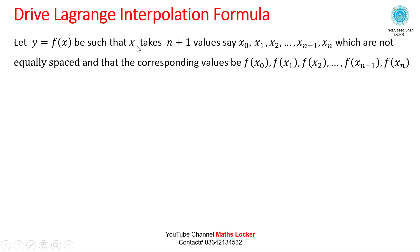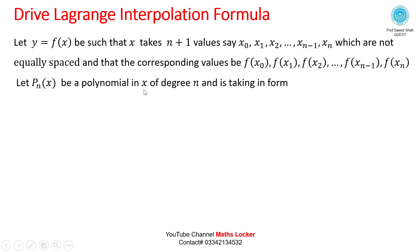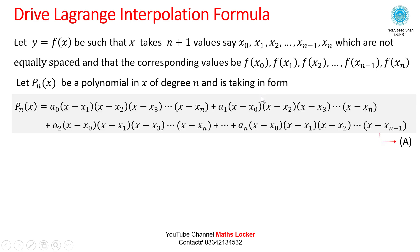Let y = f(x) be such that x takes n+1 values: x0, x1, x2, up to xn, which are not equally spaced, and the corresponding values are f(x0), f(x1), f(x2), up to f(xn). Let Pn(x) be a polynomial of degree n, written as: Pn(x) = A0(x-x1)(x-x2)...(x-xn) + A1(x-x0)(x-x2)...(x-xn) + A2(x-x0)(x-x1)(x-x3)...(x-xn) + ... + An(x-x0)(x-x1)(x-x2)...(x-xn-1). Call this equation A.